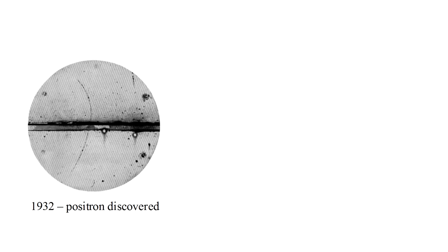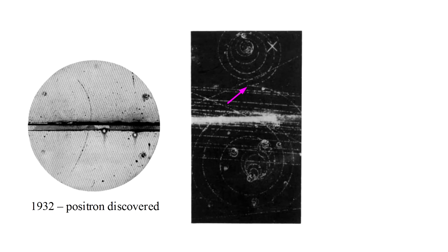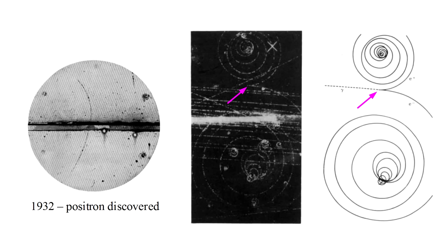Anderson observed an event of the type predicted by Dirac, confirming the existence of the anti-electron, what we now call a positron. Here is a later result that shows the process more clearly. At the point marked by the arrow, we see two particles diverge. They curve in different directions in the magnetic field, allowing us to identify the upper particle as a positron and the lower particle as an electron.